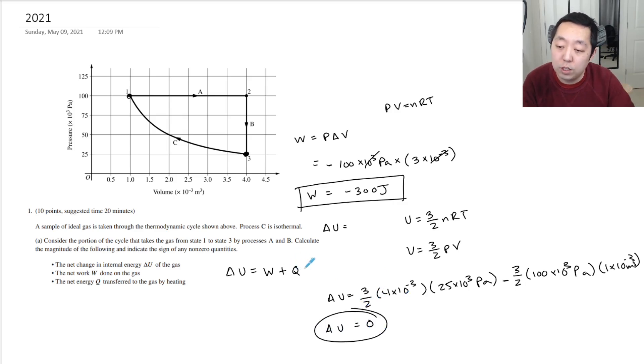And then finally I can solve for Q. Q would equal delta U minus W which is zero minus negative 300 joules which means we must have added 300 joules. And that should make sense because I lost some energy because the gas expanded and did work. But if the total change in my energy system is zero then I must have added heat in order for that to happen. Alright, awesome.